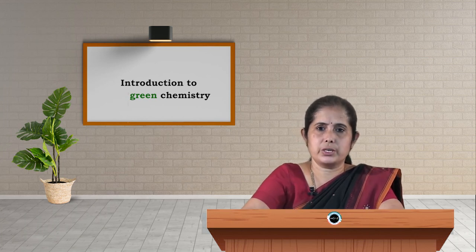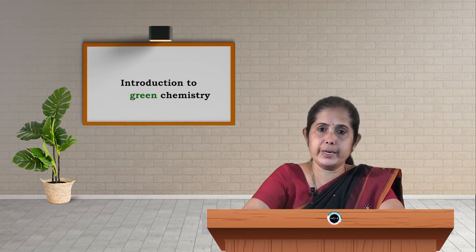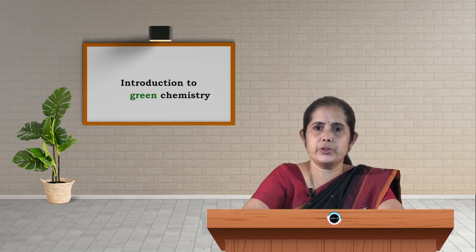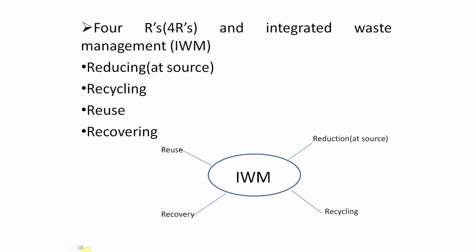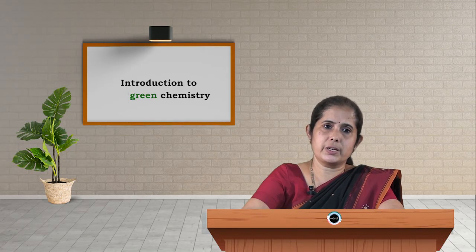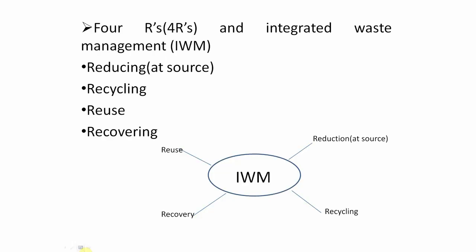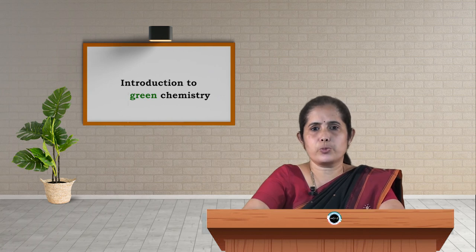Reduction means we have to use the quantity of substances minimally from the beginning, and we can replace them with environmentally friendly substances. Recycle means anything we use — for example, an organic solvent used for a reaction — after the reaction we have to recycle it: distill it out, convert it into pure form, and reuse it. So reduction, recycling, reuse, and recovery — these 4 R's should be an integral part of our process development when we develop technology for the manufacture of chemicals. Using these 4 R's as integrated waste management will help minimize dumping of waste into the environment and minimize energy and chemical consumption.